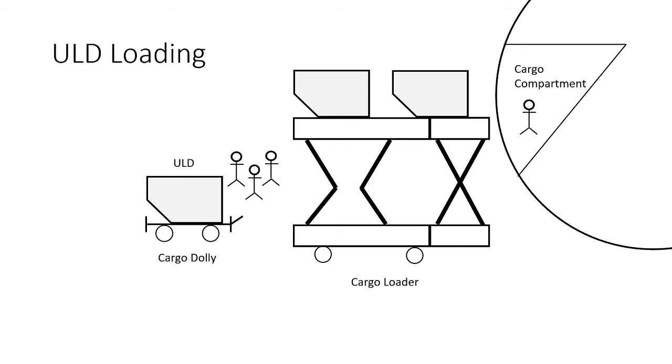The cargo loader lifts these ULDs up to the cargo door height of the aircraft, from where the ULDs are loaded into the cargo compartment.